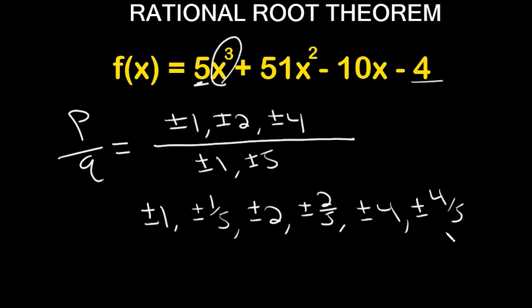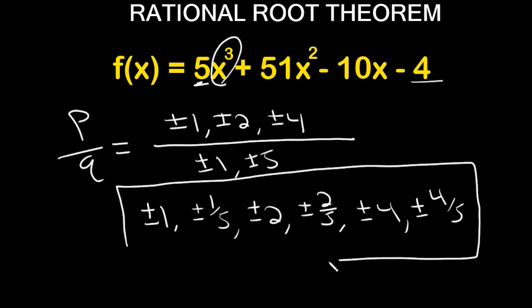So those are the possible rational roots of this polynomial. It's not guaranteed these are zeros, but they're possibilities. If you wanted to check, you would use synthetic division to see if you get a remainder of zero, but that's for another video. All we're covering here is how to get the list of possible rational zeros.